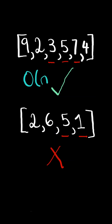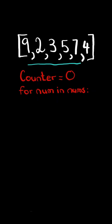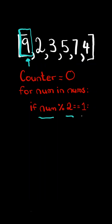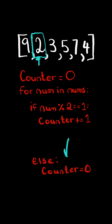We will solve this in O(n) time. We will have a counter set to zero, and we will iterate through the list. To determine if a number is even or odd, if the number mod 2 equals 1, then the number is odd, and we increment our counter. If the number is even, we reset the counter to zero, and we continue.